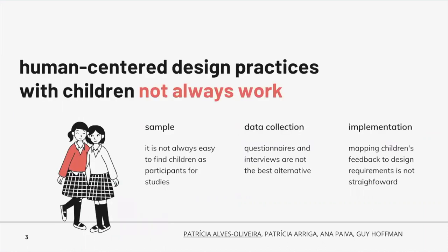Let's look deeper into why children have not been traditionally included in the design of robots. One reason is sample representation, as it is not always easy to find children as participants for studies. When we do have access to children, we quickly realize that traditional methods of data collection, such as questionnaires, interviews, and thinking aloud, don't really work with children. And when we can finally get some data from children, we can be faced with a mapping problem where the children's data is not easily translated into robot requirements — it is not simple to understand what to change in the robot given the feedback we got from children.